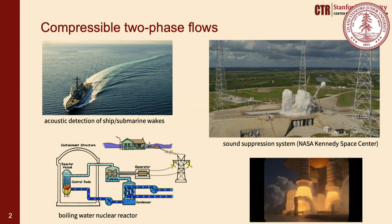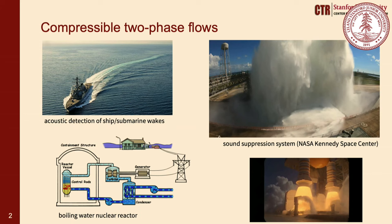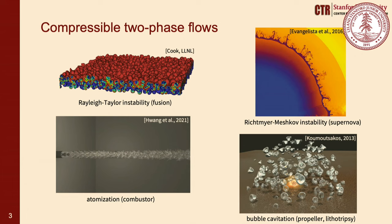Another application is the boiling water nuclear reactor, where it is important to accurately model boiling phenomena — also a compressible two-phase flow — for the efficient design of nuclear reactors. More applications include modeling Rayleigh-Taylor instability for inertial confinement fusion, Richtmyer-Meshkov instability seen in supernova and galactic flows, atomization for combustor design, and bubble cavitation important for propeller design and medical applications such as lithotripsy.